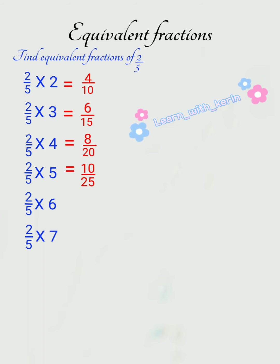Next, we will multiply 2 by 5 with 6. 2 6's are 12, 5 6's are 30. So, our fifth equivalent fraction is 12 by 30.